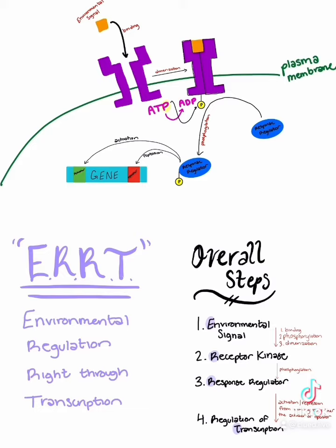An easy way to remember how receptor kinase works and controls transcription is through the acronym EERT, which stands for Environmental Regulation Right Through Transcription. It's also important to keep track of phosphorylation — where the phosphate is being taken from and where it's going.